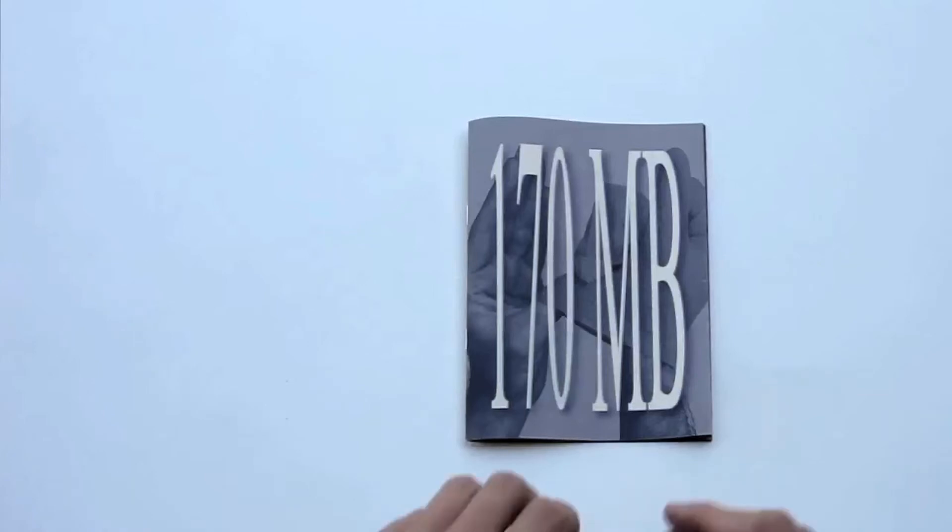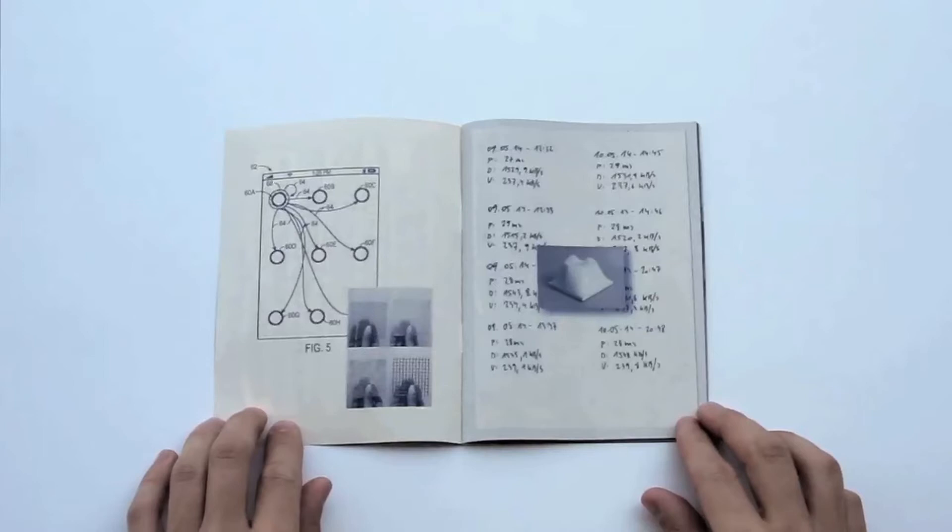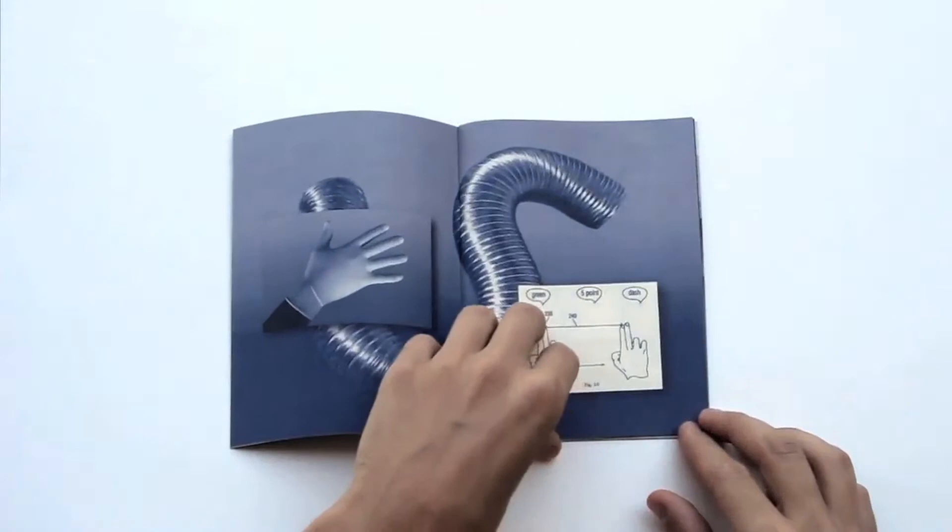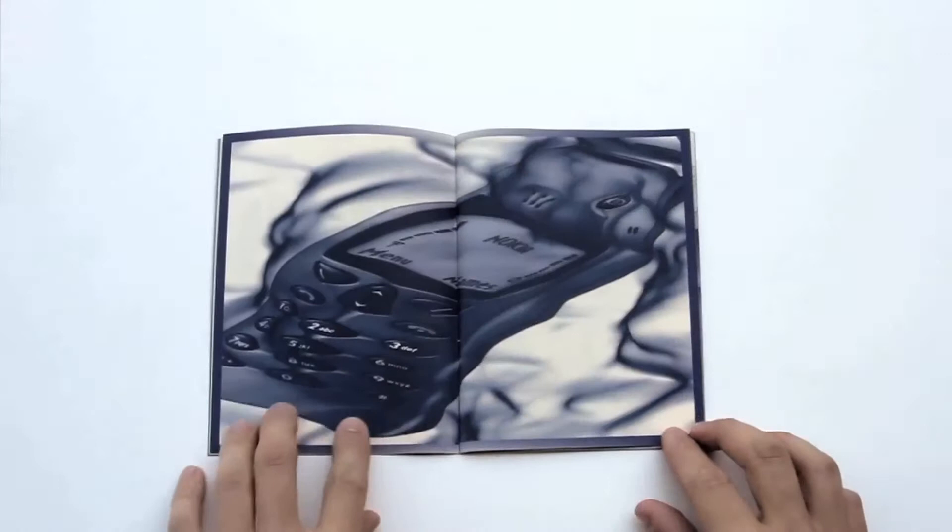The dominant organ of sensory and social orientation in pre-alphabet societies was the ear. Hearing was believing. The phonetic alphabet forced the magic world of the ear to yield to the neutral world of the eye. Man was given an eye for an ear.